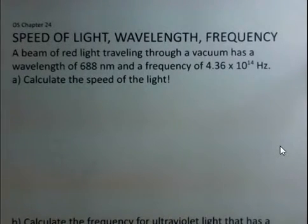In this first situation, we've got a beam of red light traveling through a vacuum. The wavelength is given, 688 nanometers, and the frequency is given, 4.36 times 10 to the 14th hertz. Calculate the speed of light, exclamation point.